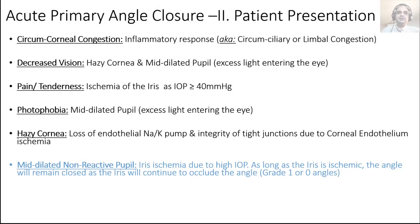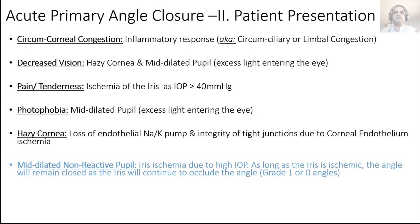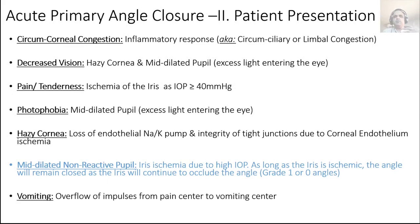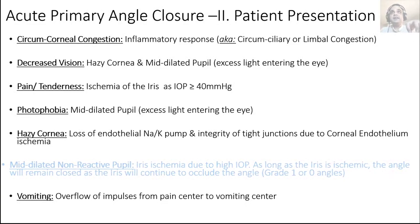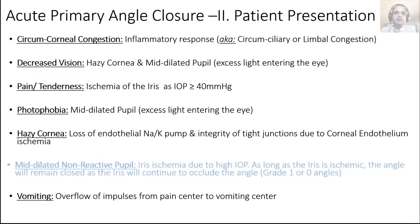The mid-dilated non-reactive pupil occurs because the iris is ischemic due to high IOP. As long as iris ischemia persists, the iris will not move away from the angle — it's stuck. No matter what drugs you put in the eye to stimulate the sphincter, the iris simply won't work because it's ischemic. So the iris continues to occlude the angle producing grade 1 or grade 0 angles. Vomiting is simply due to overflow of signals from the pain center to the vomiting center.